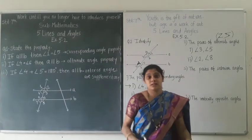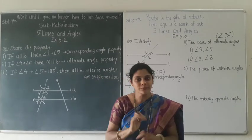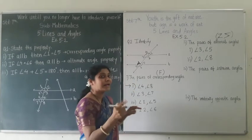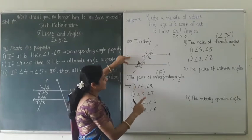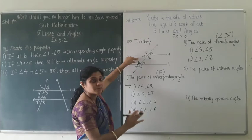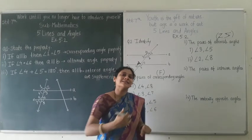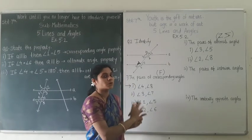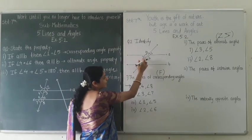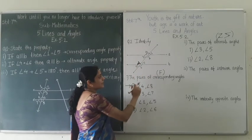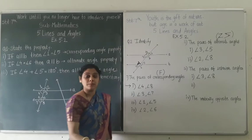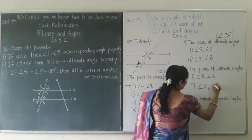Third, the pairs of interior angles. Interior means the angles located at the inner part of the diagram — they lie between the two parallel lines A and B. An important property: while writing the pair, both angles must be on the same side of the transversal — both on the left or both on the right. On the left-hand side, angles 3 and 8 lie between the two lines, so the first pair is angle 3 and angle 8. Similarly, the second pair is angle 2 and angle 5.